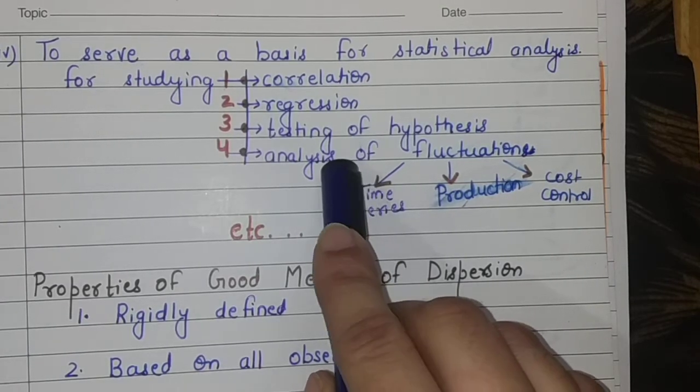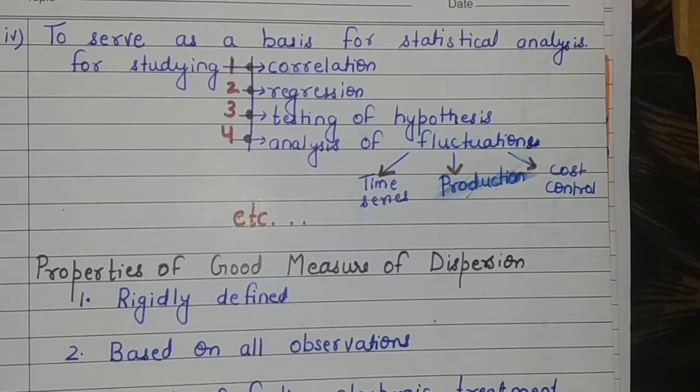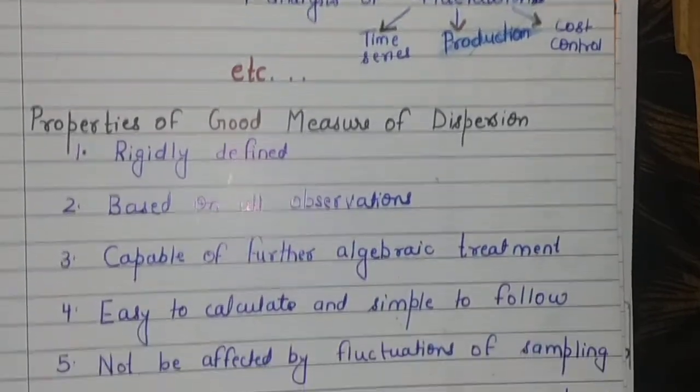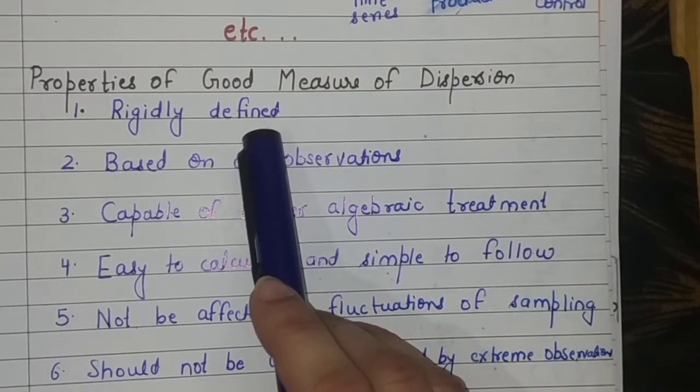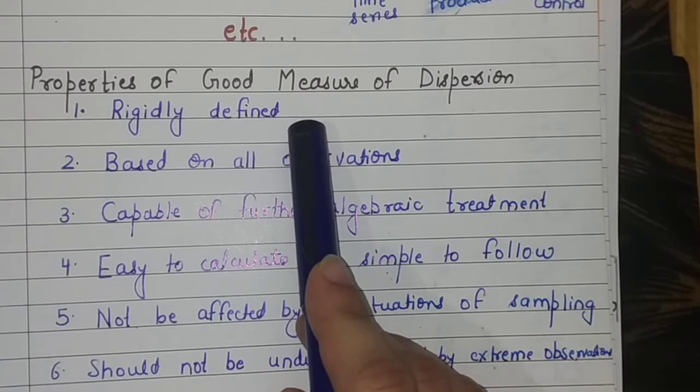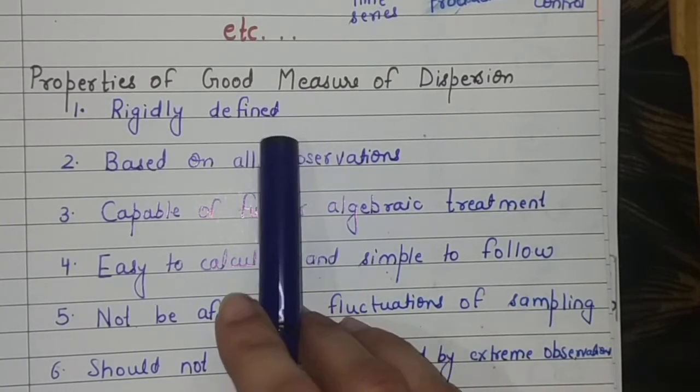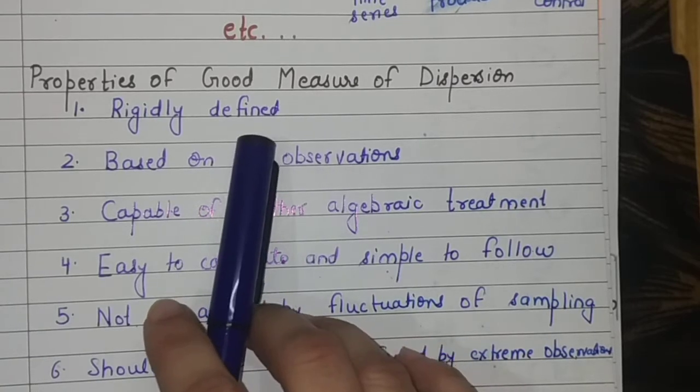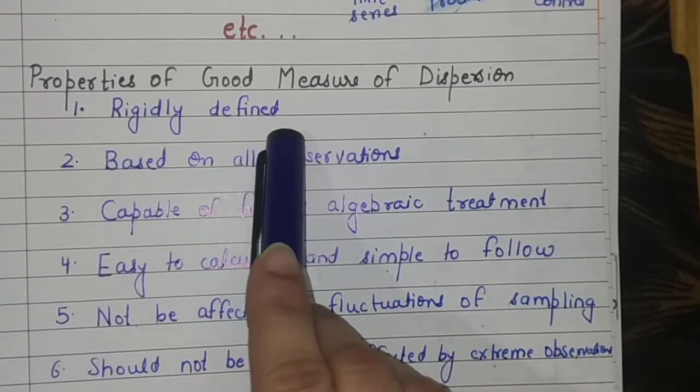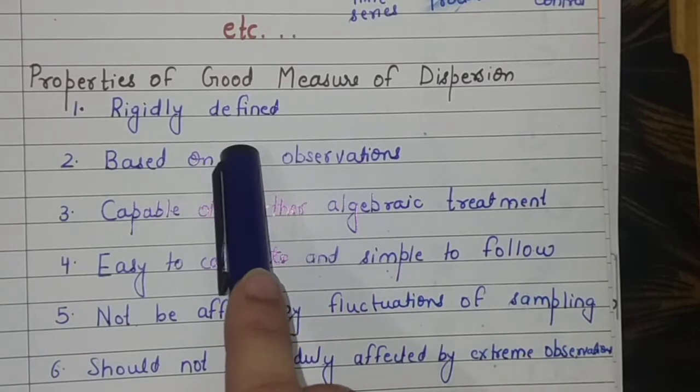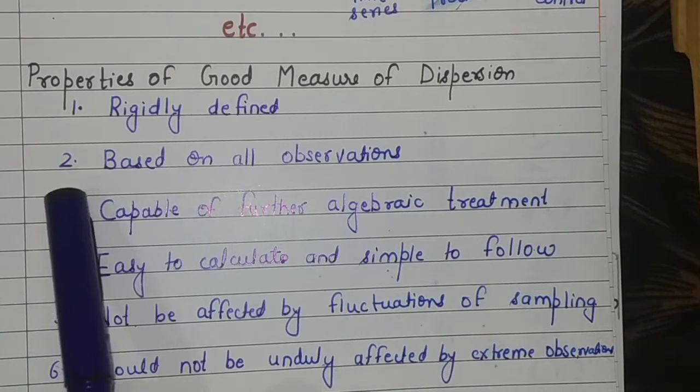Now what are the properties of good measure of dispersion? First, your measure of dispersion is best when it is rigidly defined, there should be a formula behind it. Not like guesswork or estimation that you just say the data is spread this much. The method of measuring dispersion should be properly defined by a formula, which is the hallmark of a good measure of dispersion.